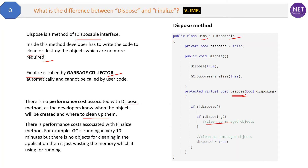In the case of the finalize method, since it runs automatically, there is a performance cost associated with it. For example, if the garbage collector runs every 10 minutes but there are no objects to clean up, it is still consuming memory by running — and that memory usage is wasted when there are no objects to dispose. This is the difference between the dispose and finalize methods.